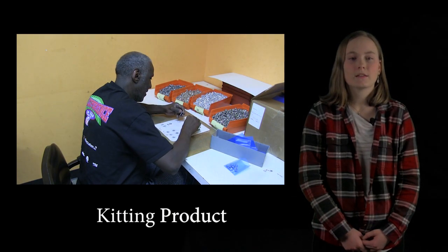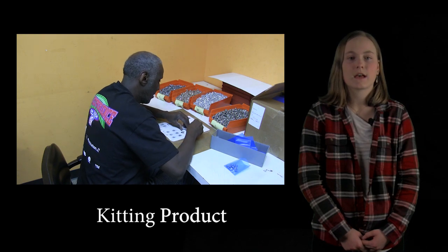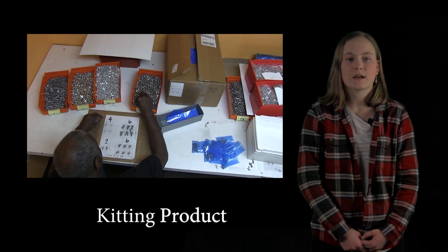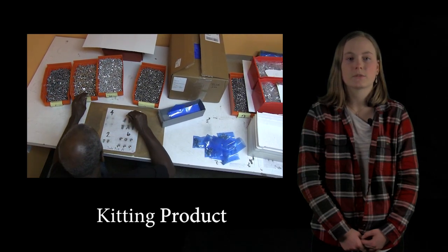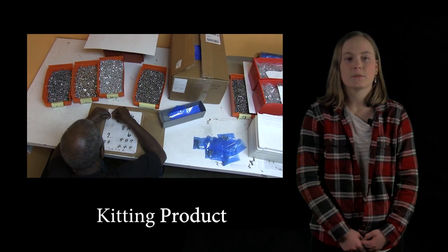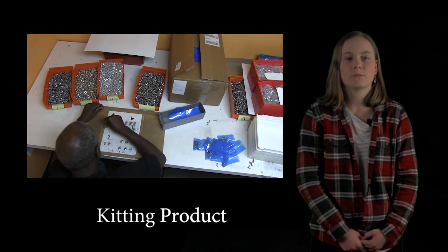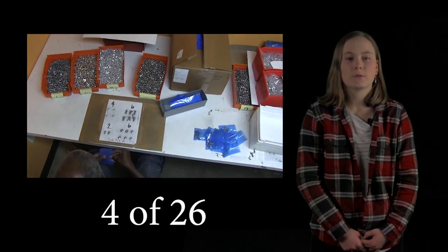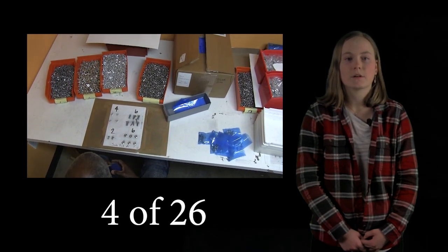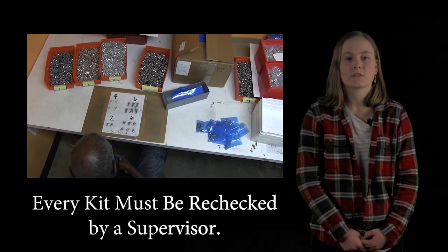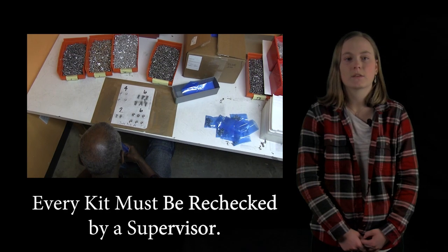One problem that ProPack is having at their packaging facility is accurately and efficiently kitting product. Kitting requires a Weaver employee to accurately count, package, and seal specific assortments of screws, nuts, and bolts. At this time, only the employees that have the ability to count and package the exact number of parts are able to work this process. Out of the 26 employees at ProPack, only four are currently working the process. With their current process, every kit has to be checked by a supervisor to ensure complete accuracy before they can be sealed and shipped.